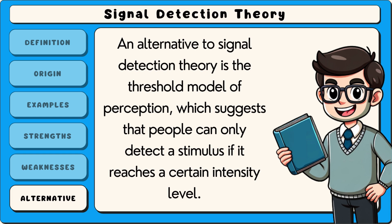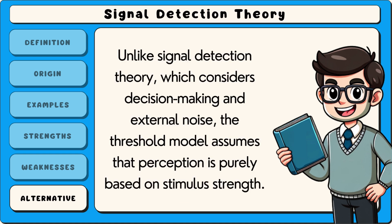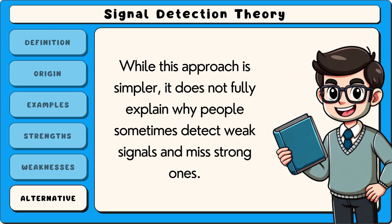An alternative to signal detection theory is the threshold model of perception, which suggests that people can only detect a stimulus if it reaches a certain intensity level. Unlike signal detection theory, which considers decision-making and external noise, the threshold model assumes that perception is purely based on stimulus strength. While this approach is simpler, it does not fully explain why people sometimes detect weak signals and miss strong ones.